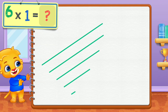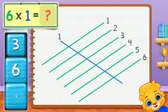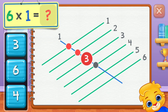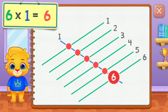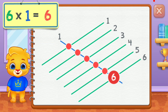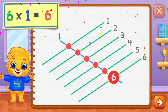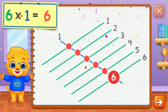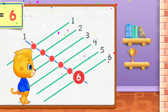Six times one equals — one, two, three, four, five, six. Six times one equals six.